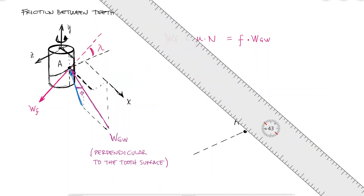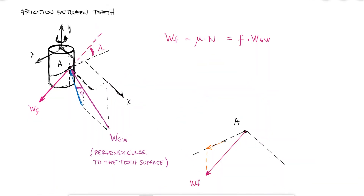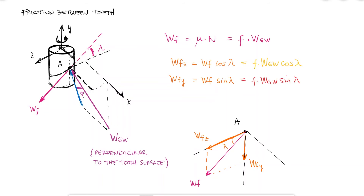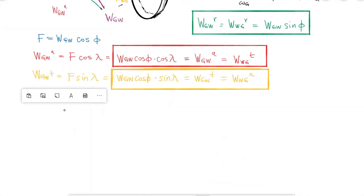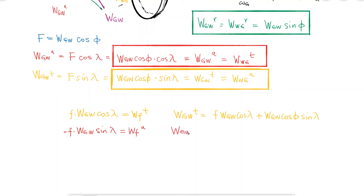This friction force will have a component in the z-direction and also a component in the y-direction. The z-component will be cosine of lambda and the y-component will be sine of lambda. Substituting the friction force and noting that z corresponds to the tangential direction and y to the axial direction, we can add these two new expressions to the previous equations when we want to account for friction forces.